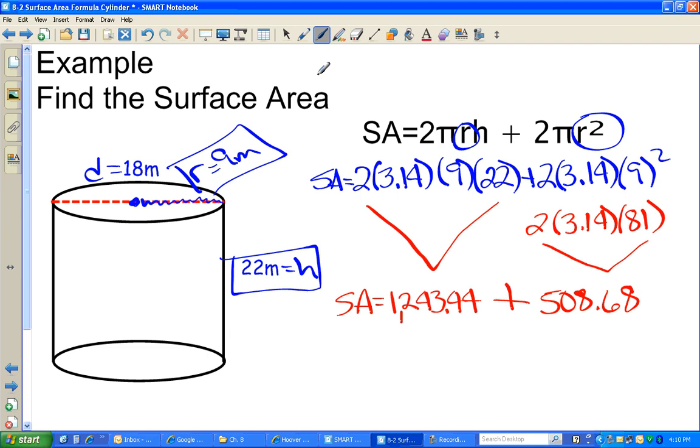So the last piece is just to add those together. 1243.44 plus 508.68. Punching it in my calculator and I get 1,752.12 meters squared.